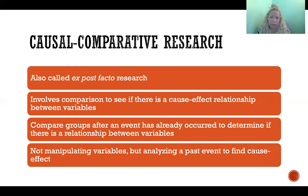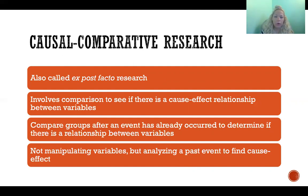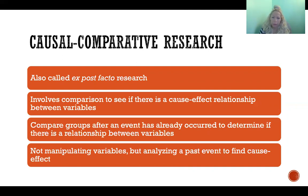A causal comparative research design is also referred to as ex post facto research because the research is done after the event being studied has already occurred. You're looking back at something that has already happened to see if you can find a relationship between the variables. In this type of research design, you might be able to determine a cause and effect relationship, which is why it's called causal comparative. You still might simply observe correlation rather than causation, but it's more possible in this type of design to observe a causal relationship.